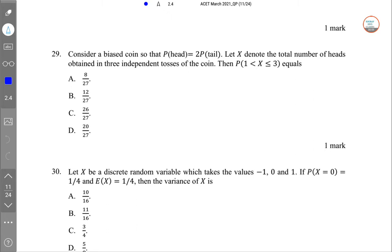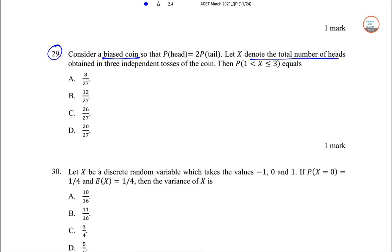In today's video, I'm going to solve KCE March 2021 statistics starting from problem 29. Consider a biased coin where the probability of head is 2 times the probability of tail. Let X be the total number of heads obtained in 3 independent tosses. Find the probability of 1 < X ≤ 3.